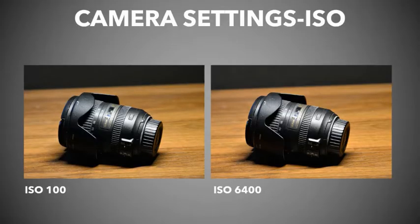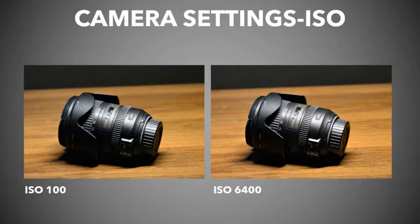ISO has to do with the sensitivity of your sensor to light. If you're in a very dark environment and you increase the ISO up to a very high number, you can shoot in very low light scenarios and still gather pretty good images. However, if you have good lighting, there's no reason to shoot at a high ISO number. In fact, you want to turn it down as low as possible.